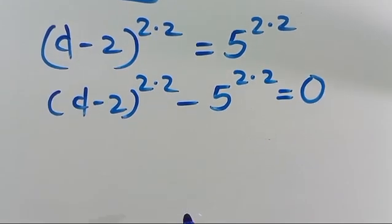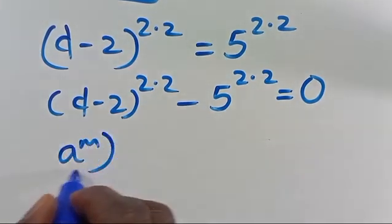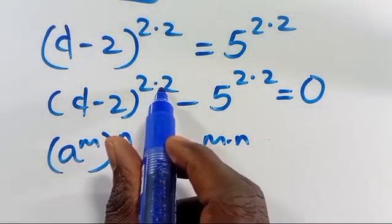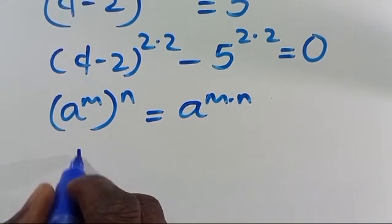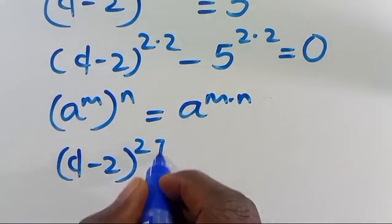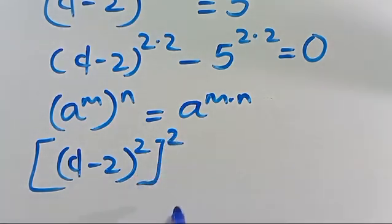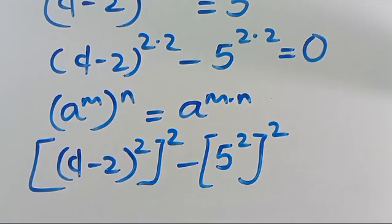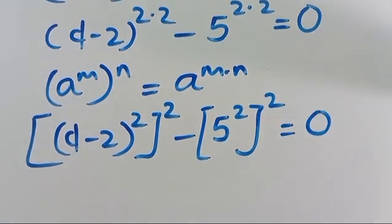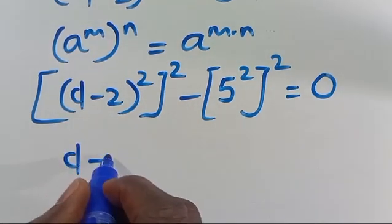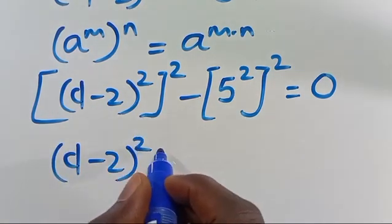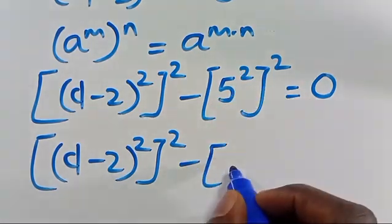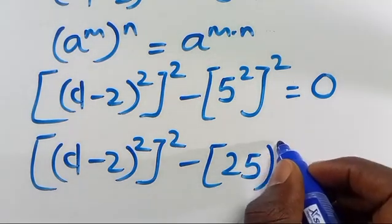Now recall that when we have A to the power of M in parenthesis to the power of N, we can have this as A to the power of M times N. So we can interchange this. Here we have D minus 2 in parenthesis to the power of 2, then to the power of 2, minus 5 to the power of 2, to the power of 2, equals 0. So we have D minus 2 in parenthesis to the power of 2, then in another parenthesis to the power of 2, minus 25 in parenthesis to the power of 2, equals 0.